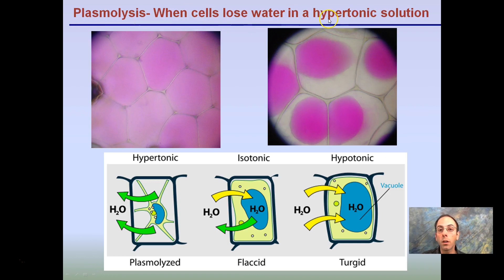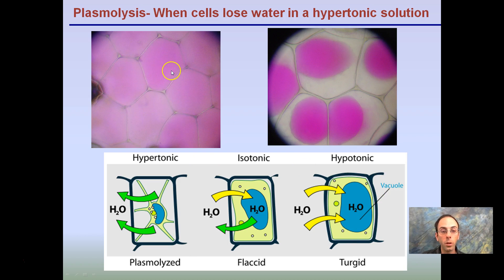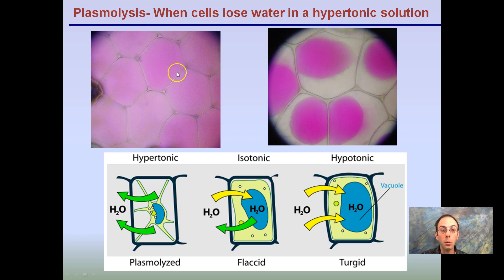Plasmolysis is when the cell loses water in a hypertonic solution. Looking at a plant cell and specifically the vacuole — in a hypotonic environment, it's nicely swelled up. Moving into iso- to hypertonic conditions, water is leaving the cell at a greater rate and we notice the vacuole getting smaller. Here it takes up about 90% of the cell, and in worse conditions it takes up an even smaller portion.